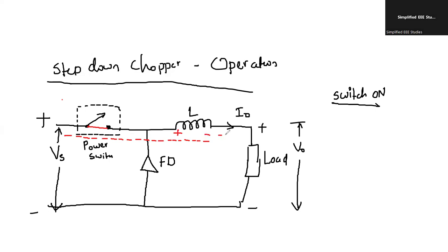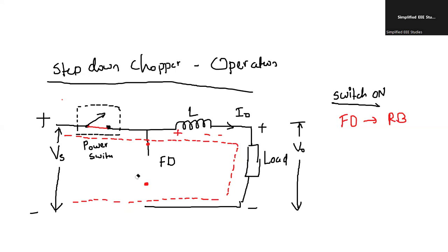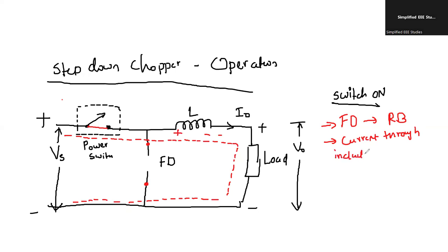The inductor is getting charged. Whenever the switch is ON, the freewheeling diode is getting reverse biased — it is reverse biased. It will get reverse biased, and we can mark it as an open switch, as it is not conducting. The current through the inductor is getting increased — current through inductor increases.